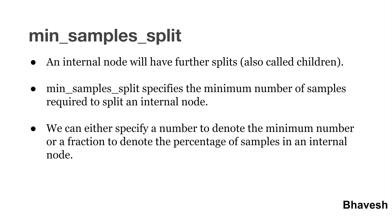Let's consider the next hyperparameter: min_samples_split. In a decision tree, you have multiple nodes — some are internal nodes and others are leaf nodes. An internal node will have further splits. min_samples_split specifies the minimum number of samples required to split an internal node. You can either specify an integer to denote the minimum number of samples you want in an internal node, or a fraction to denote the percentage of samples in an internal node.